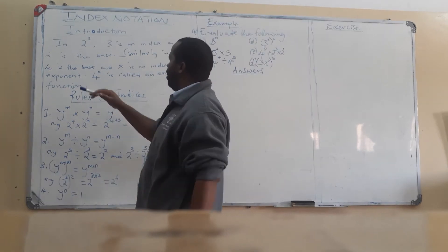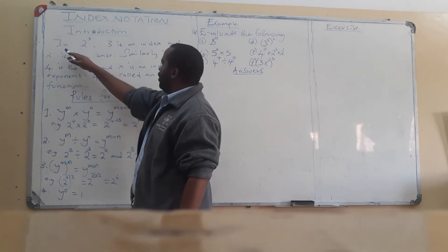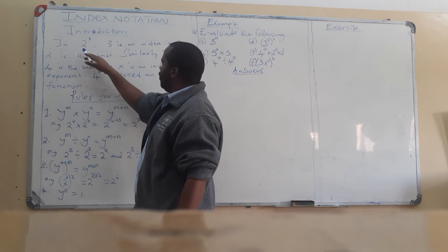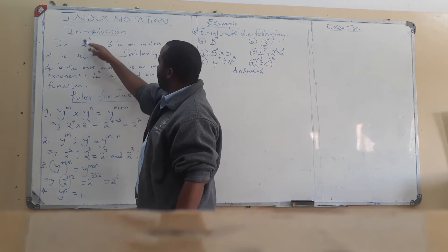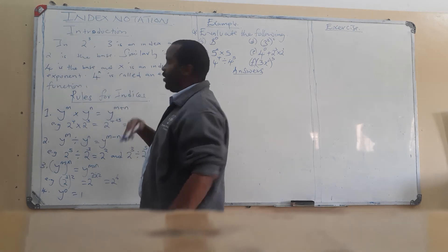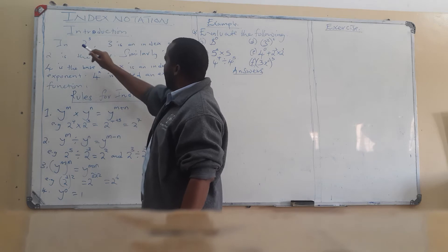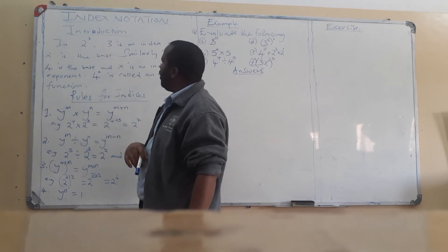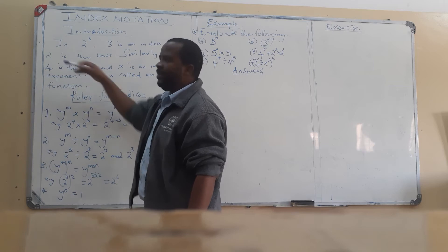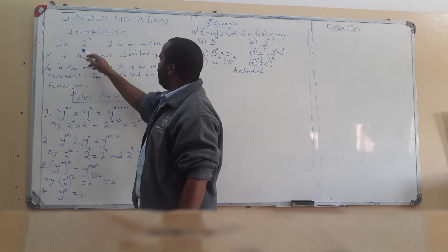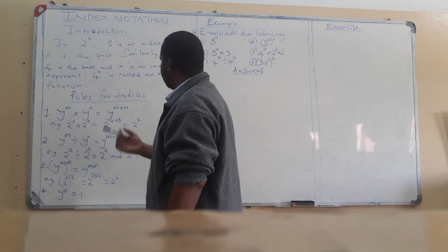To start with, in 2 to the power 3, the power 3 is called an index and the 2 is called the base. So in 2 to the power 3, 2 is the base and the 3 is an exponent, or an index, or a power.